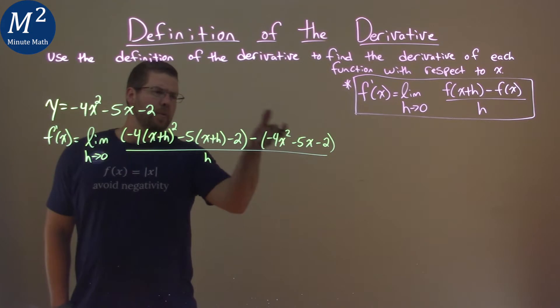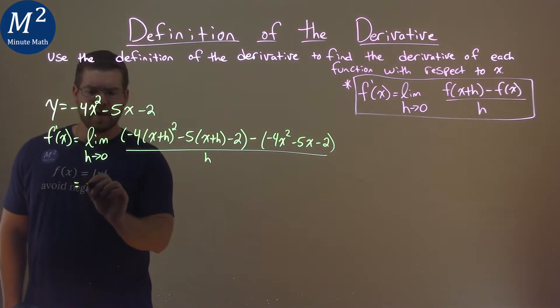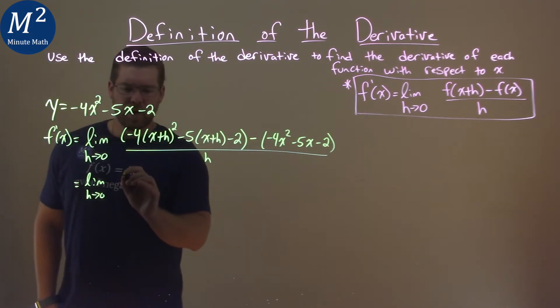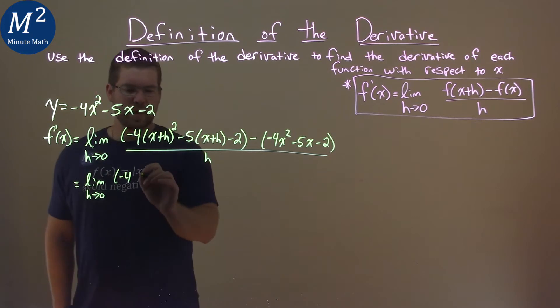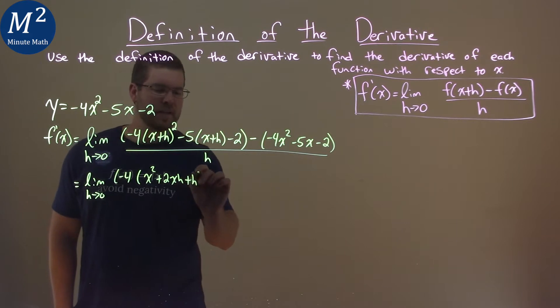Well, let's go simplify what we can in the numerator and see if we can cancel some things out. So we have a limit here as h approaches 0. Now, we have negative 4, and this whole x plus h all squared, hopefully you have practiced this enough, as x squared plus 2xh plus h squared.